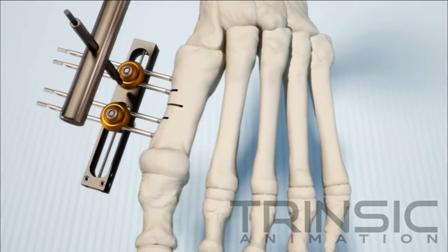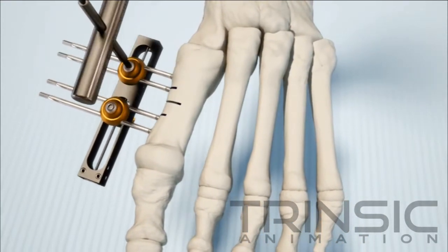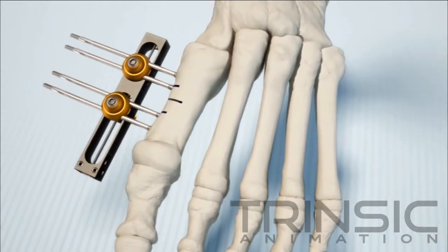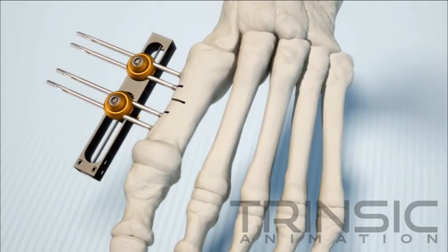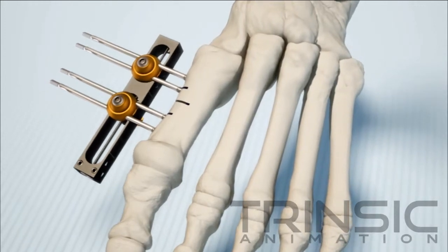Tighten the screws without locking them to allow the rail body free movement so that it can be aligned parallel to the metatarsal shaft. The screws should be loose enough to make the adjustment.